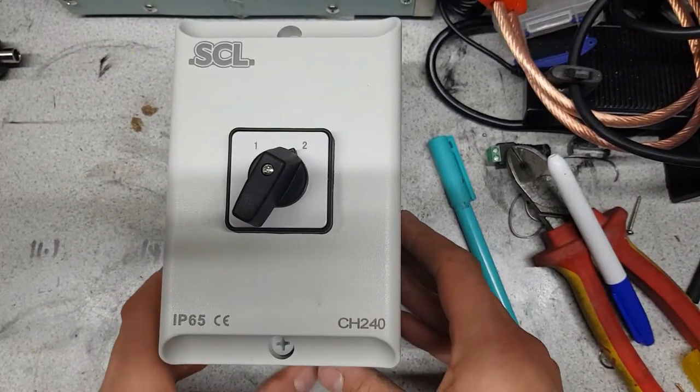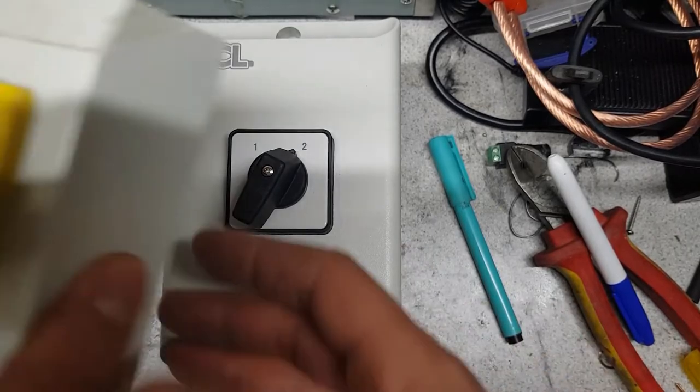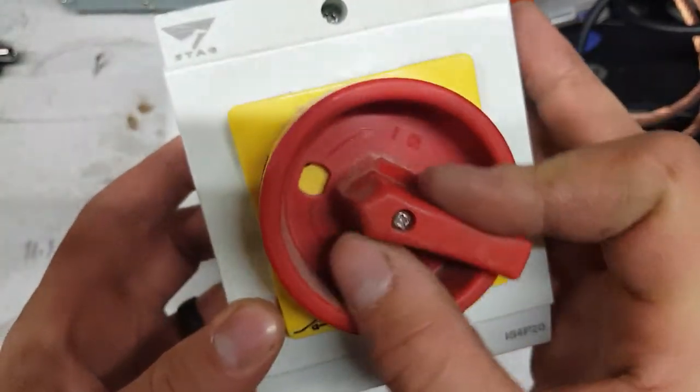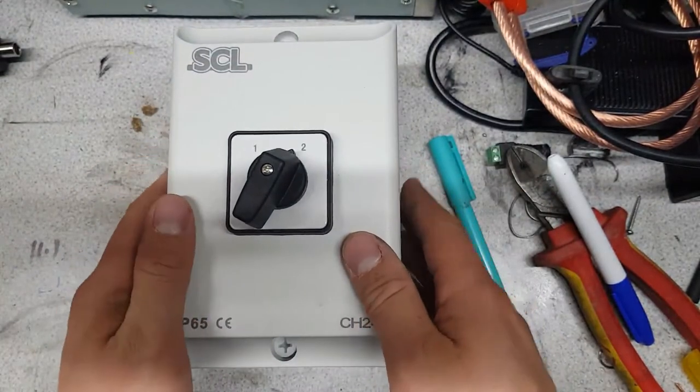Good evening YouTube, gonna take a quick look at this switch. It has a 1 and a 2, as opposed to this other switch which has an off and an on, 0 and a 1.